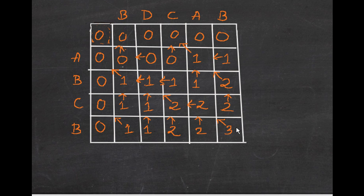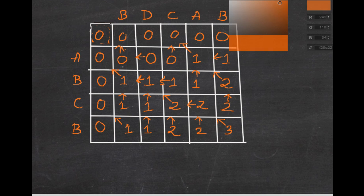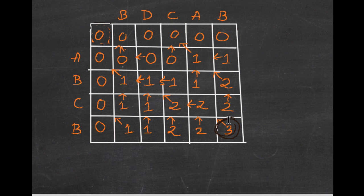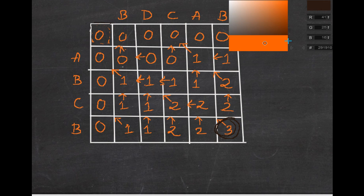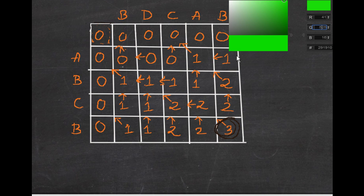The length of the longest common subsequence is 3. Look at the two strings: BDCAB and ABCB. The common characters are B, C, B — so BCB is the longest common subsequence from these two strings. Now, what we want to do next is compute the actual sequence itself, not just the length. Let's compute the sequence.